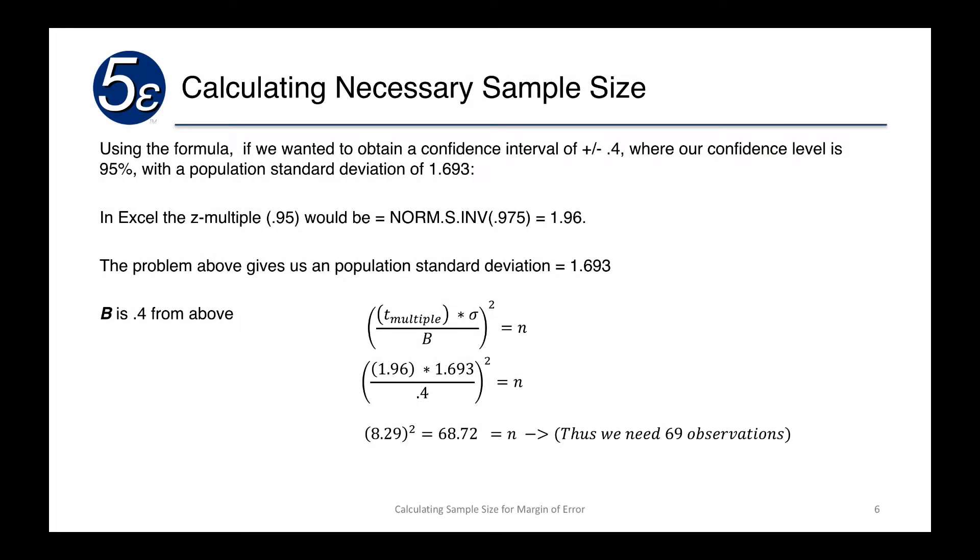So using the formula, if we wanted to obtain a confidence interval of plus or minus .4 with a confidence level of 95% and a population standard deviation of 1.693, we could do the following.